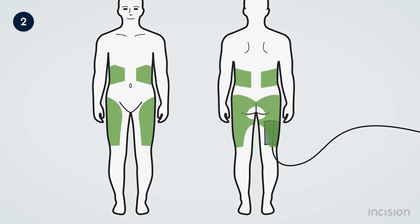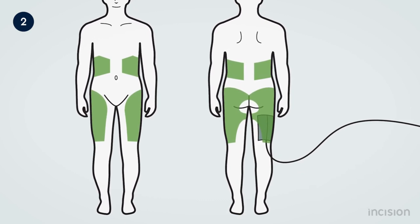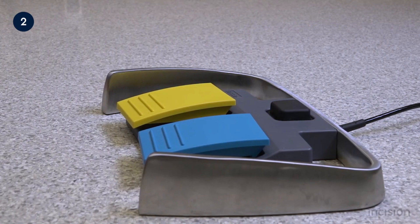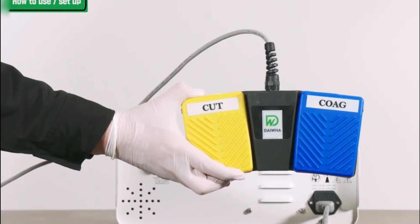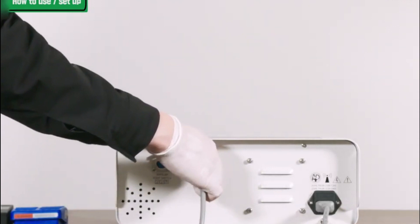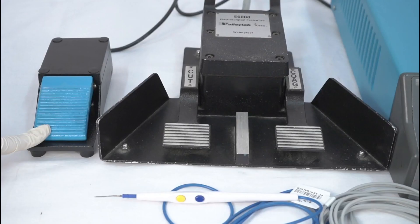An electric footswitch works like any other electric switch. Inside the footswitch, there are contact points, and the wires of the footswitch are connected to the electric circuit of a device. When wired normally open, the contacts within the footswitch are not touching, so the electric circuit is not connected and the device is off. When the footswitch is compressed, the contacts will be closed, connecting the electric circuit and switching the machine on.